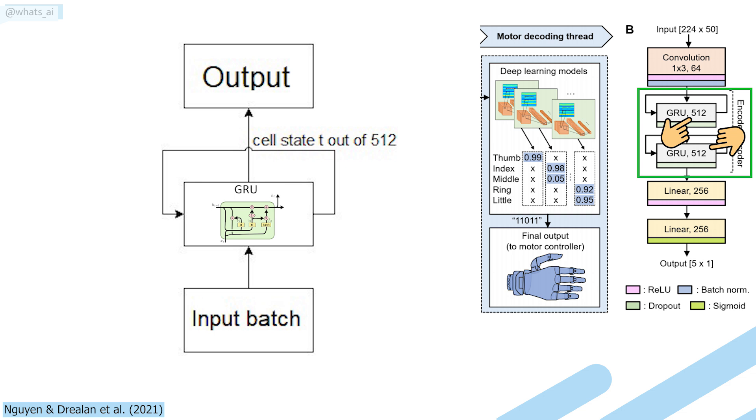Each GRU block receives the input at the current step and the previous output to produce the following output. We can see GRUs as an optimization of the basic Recurrent Neural Network architecture.